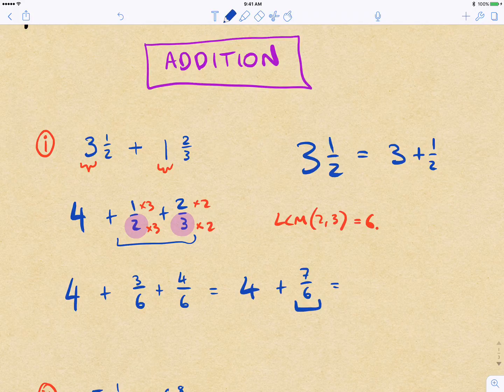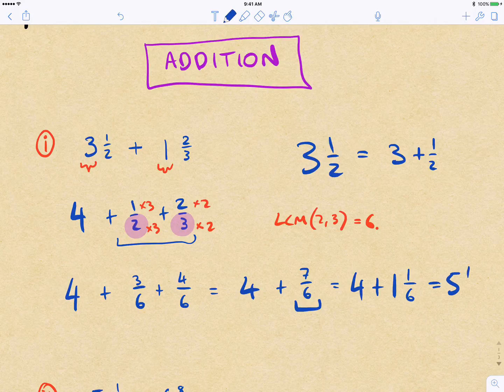And so it's 7 divided by 6, which gives us 1 and an extra sixth left over. So 7 sixths is the same as 1 and a sixth. So we have 4 plus 1 and a sixth. All up, we get 5 and a sixth as our final answer.